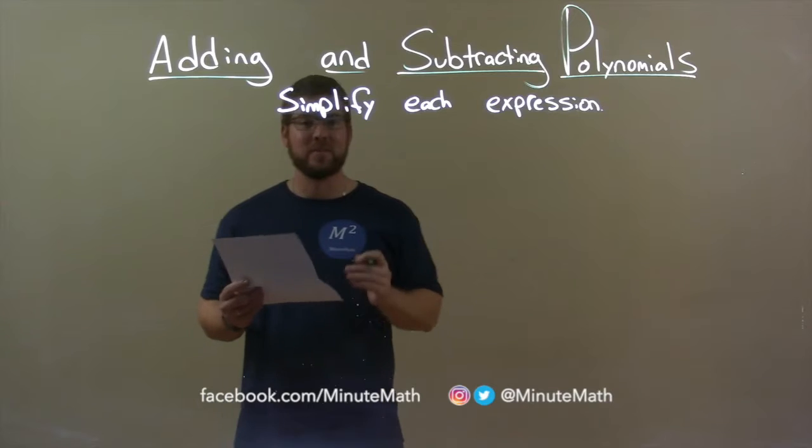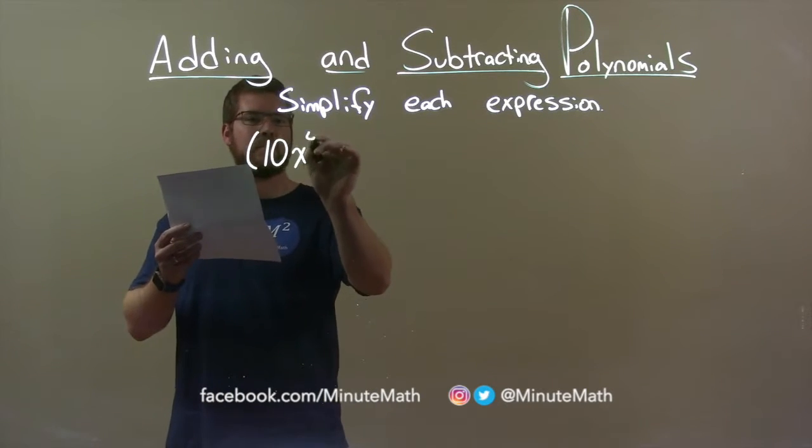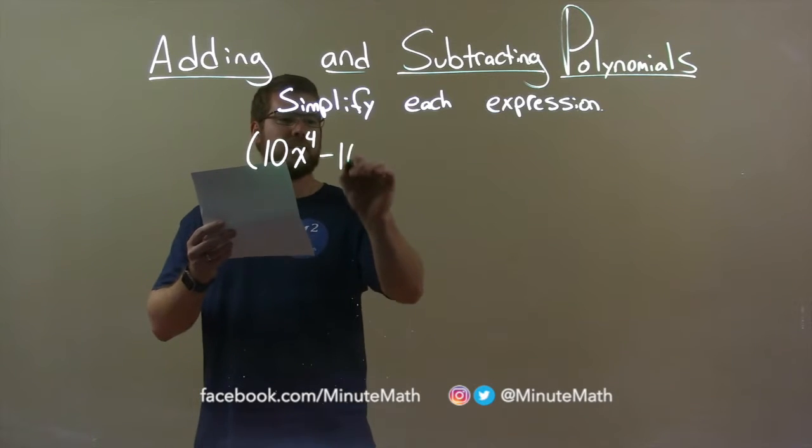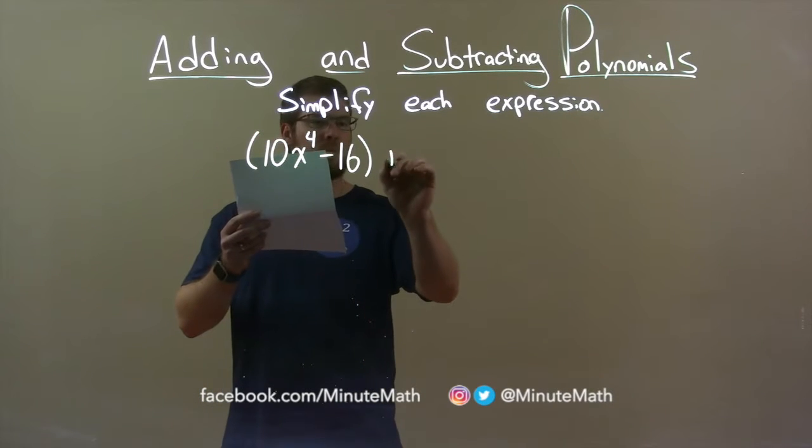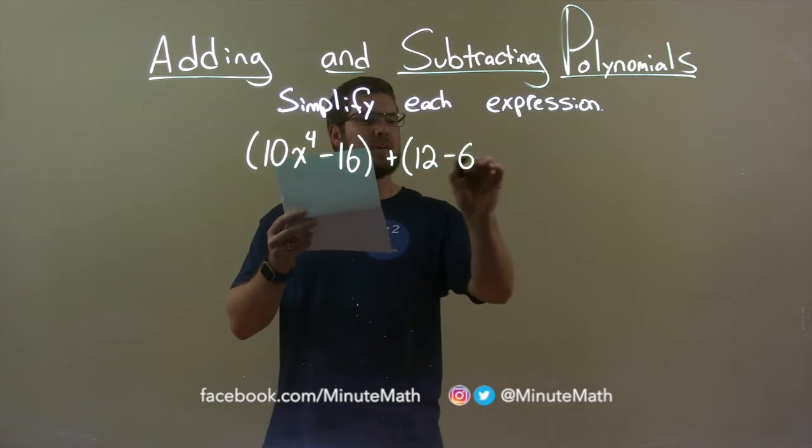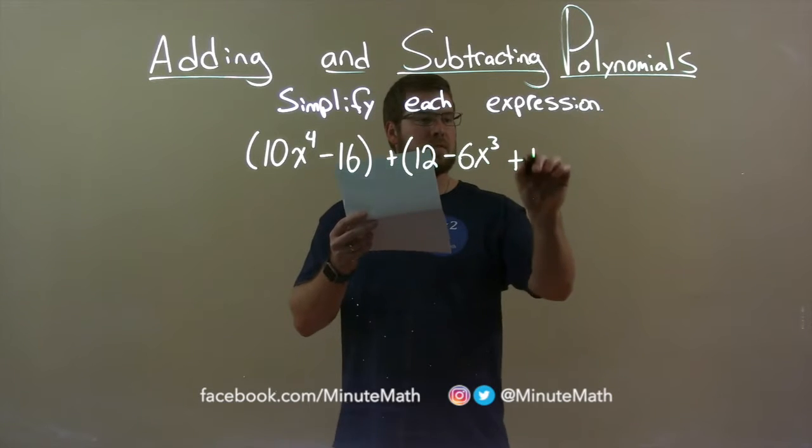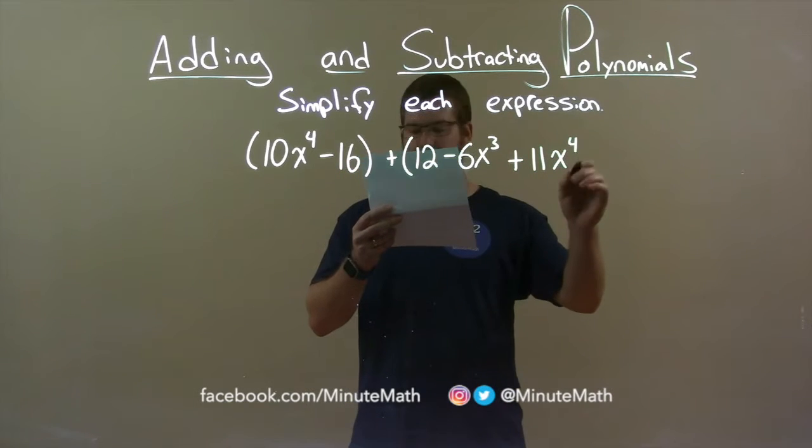If I was given this expression, 10x to the 4th minus 16 plus, second parenthesis, 12 minus 6x to the 3rd plus 11x to the 4th.